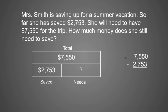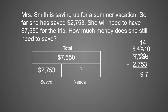Let's work this problem out together. If I have 0 minus 3, I cannot subtract, so I have to regroup — I'll go next door and borrow 10 more. My 5 becomes a 4 and my 0 becomes a 10. Now 10 minus 3 is 7. Moving to my tens, I have 4 minus 5 — I can't do that, so I regroup again. My 5 becomes a 4 and my 4 in the tens place becomes a 14. So 14 minus 5 is 9. Moving to my hundreds place, I have 4 minus 7 — again I can't do that, so my 7 becomes a 6 and my 4 becomes a 14. 14 minus 7 is 7, and 6 minus 2 is 4.